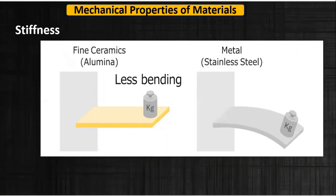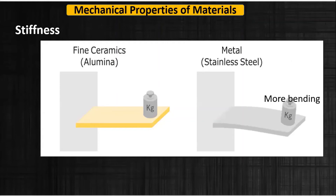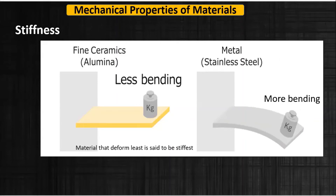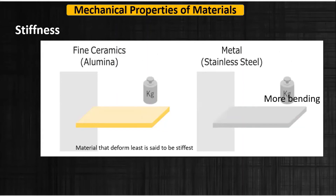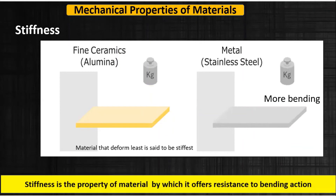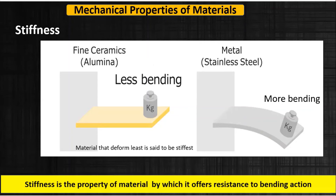To understand stiffness, let's take two different materials — one is fine ceramic and the other is stainless steel metal. When the same amount of load is applied, it is noticed that the ceramic has less stiffness compared to the metal. The material that deforms the least is said to be the stiffest material. So stiffness is the property of a material by which it offers resistance to the bending action.